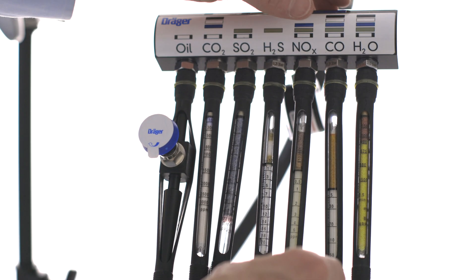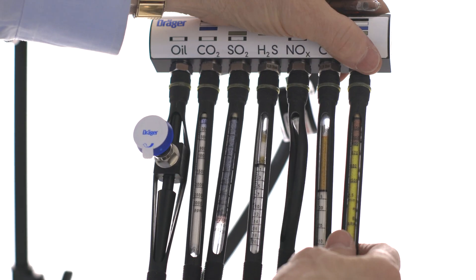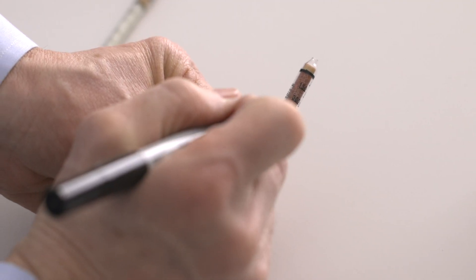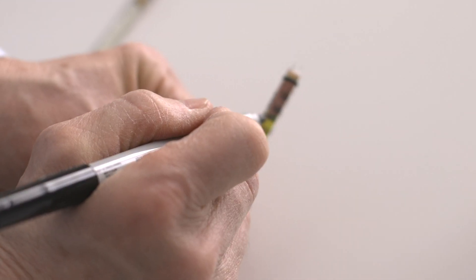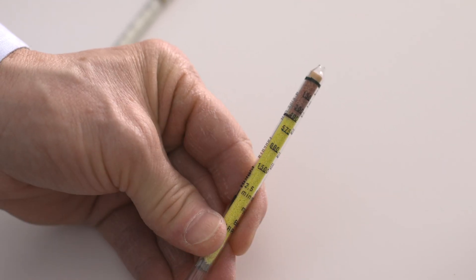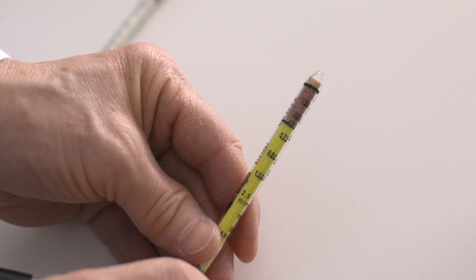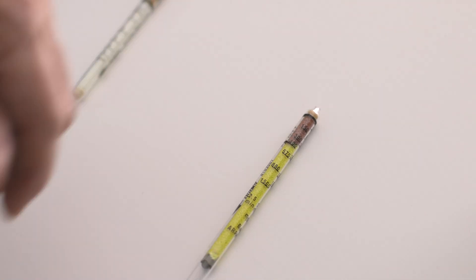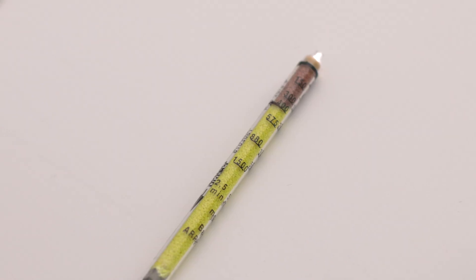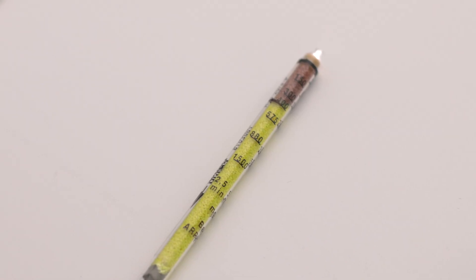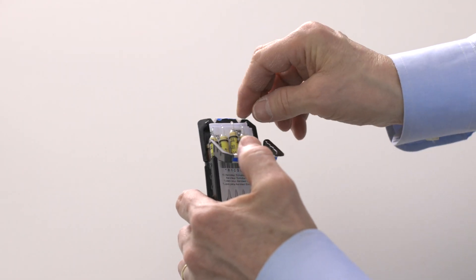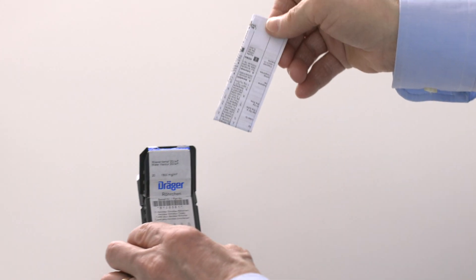At 2.5 minutes, remove the nitrous fumes and water vapor tubes. Evaluate the reddish-brown discoloration on the water vapor tube immediately. Using an indelible marker, mark the endpoint of the reddish-brown discoloration. Always read the total length of the slightest discoloration on a detector tube. In this case, the discoloration is reading 400 milligrams of water per cubic meter. There are instructions for reading the results inside the package of each tube.